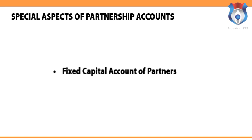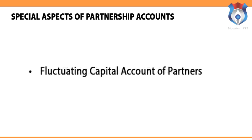The capital account showing the original capital may be changed when there is a change in the constitution, or when a partner draws money against their capital. Fluctuating capital account of partners: under this method, only one capital account is opened per partner. This account records not only the original capital contribution but also all transactions between the partners and the firm, including drawings, commission, interest on capital, bonus, and salary. The account fluctuates with every transaction, and no maximum limit can be placed on the partners' drawings, unlike in the fixed capital account system.